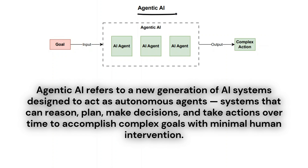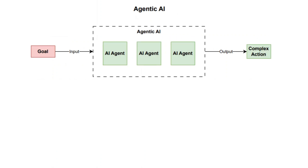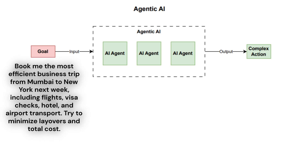Now let's see what agentic AI is. Agentic AI is a complex system that contains one or more AI agents. It takes a complex goal as input and works autonomously to achieve it. Building on our flight booking example, consider a more complex goal: 'Book me the most efficient business trip from Mumbai to New York next week, including flights, visa checks, hotel, and airport transport, and minimize the layover and total cost.'